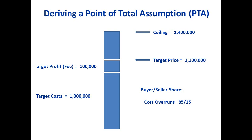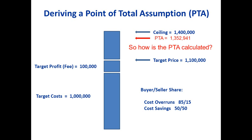You also agree what you'll do in the case that costs are less. If the vendor manages to get it done for nine hundred thousand, you agree to split that saving between you — so they would get nine hundred and fifty thousand, and you'd benefit to the tune of fifty thousand as well. With those agreements in place, you can calculate something called the point of total assumption. In this case, it would be the number you see right there.